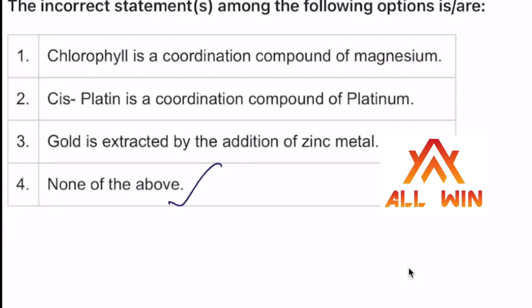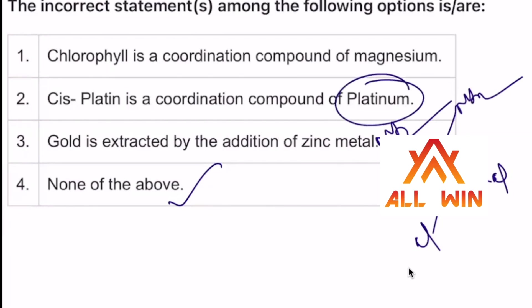Zinc is in cisplatin, sir. Yes, cisplatin — what are you doing? It's just platinum coordination. Cisplatin — anti-cancer drug, sir. Anti-cancer drug. If you have CEL, you have ammonia. You have platinum. Anti-cancer drug is an old extract.